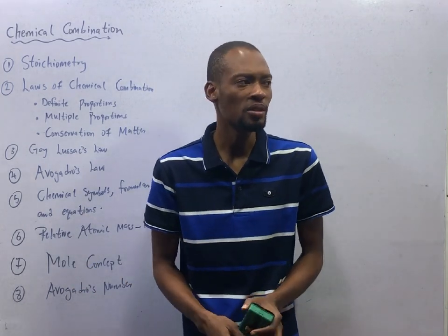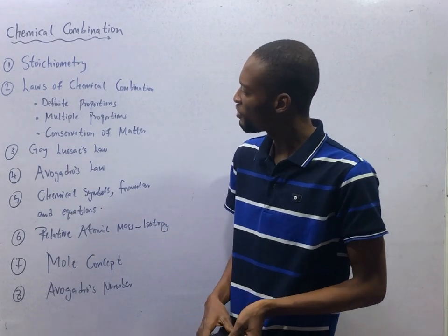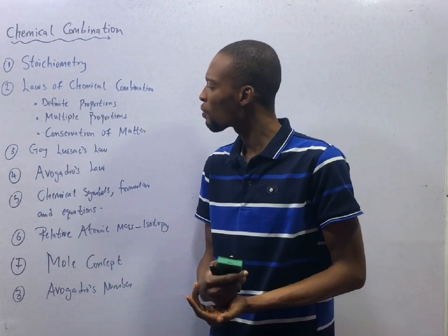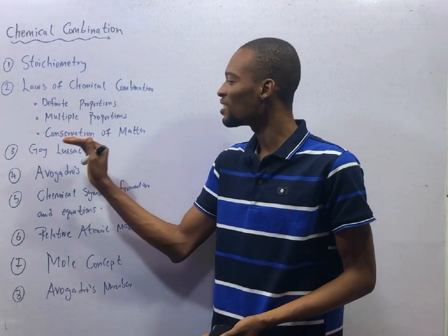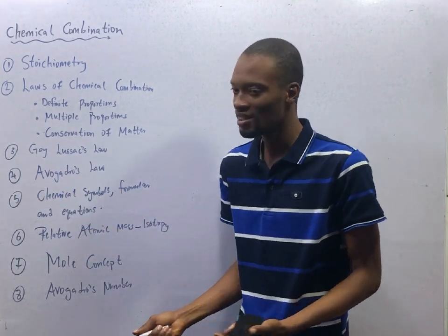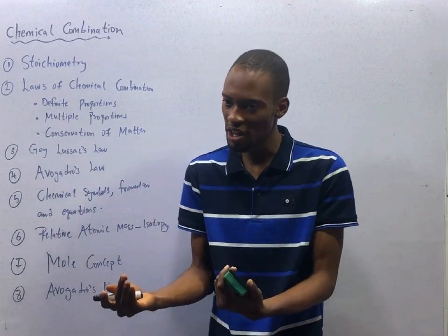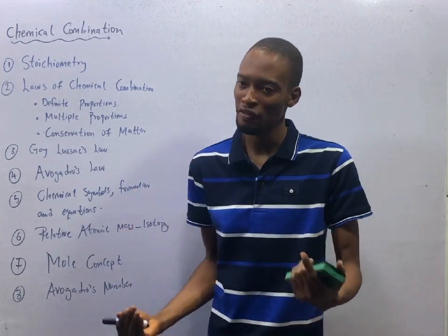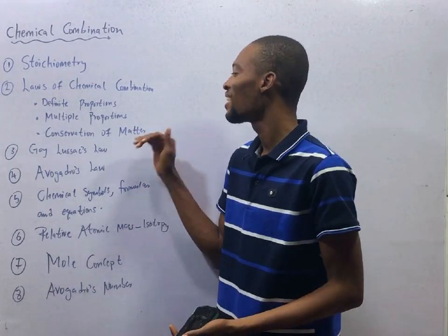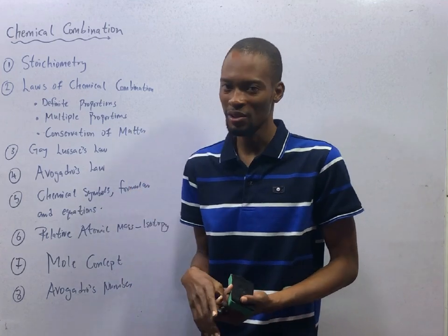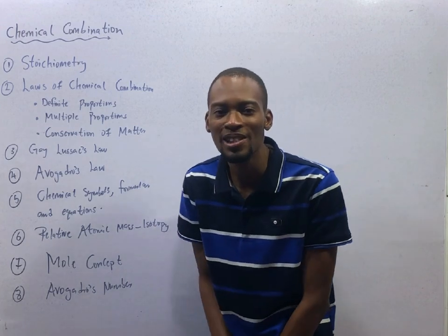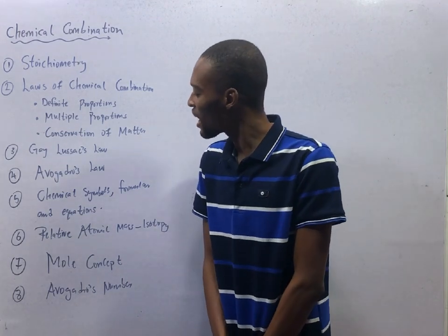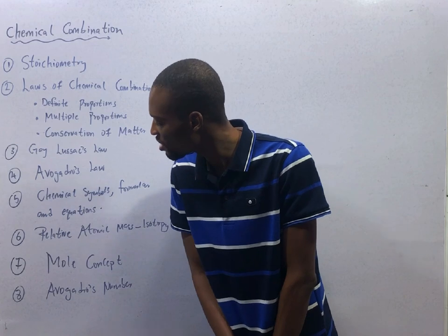The laws of chemical combination we should know are the law of definite proportion, multiple proportion, and conservation of matter. When we say something is conserved, it means that it remains. It is not created nor destroyed, although it can change from one form to another. Which means I have already given you the law of conservation of matter. Gay-Lussac's law, Avogadro's law, chemical symbols, formulas, and equations.